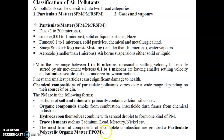Air pollutants are broadly classified into two categories: particulate matter — including suspended particulate matter (SPM) and respiratory suspended particulate matter — and gases and vapors. Particulate matter ranges in size from sub-microscopic level to about 200–300 microns. It may be inert or highly reactive depending on its chemical composition, which depends upon its source of origin. Dust is the first category, produced from natural disintegration of rocks and soils, ranging from 1 to 200 micrometers, with substantial settling velocity causing deposition on the earth's surface.